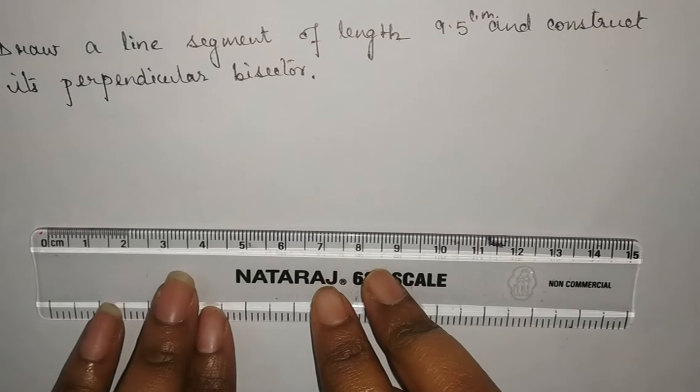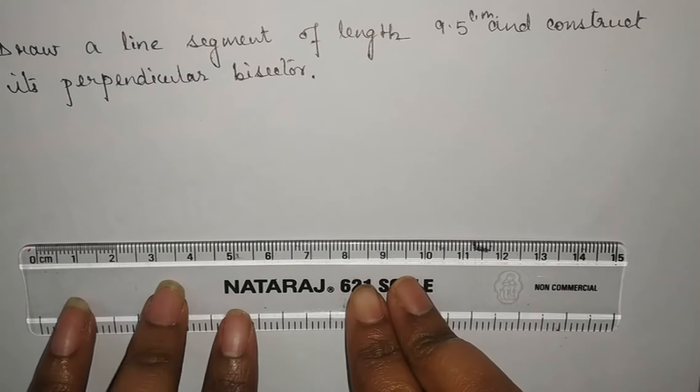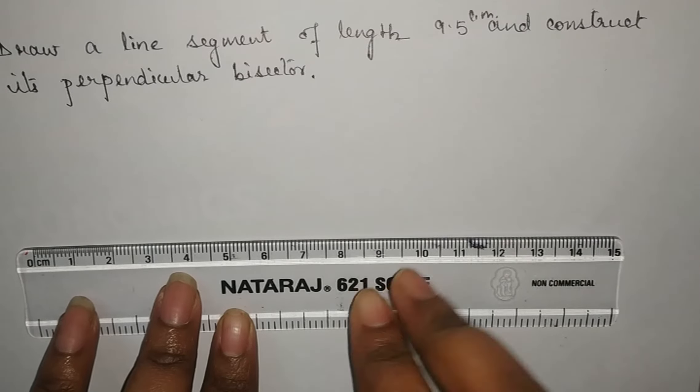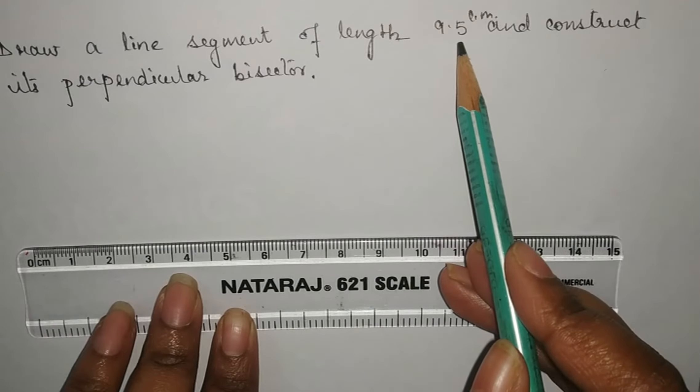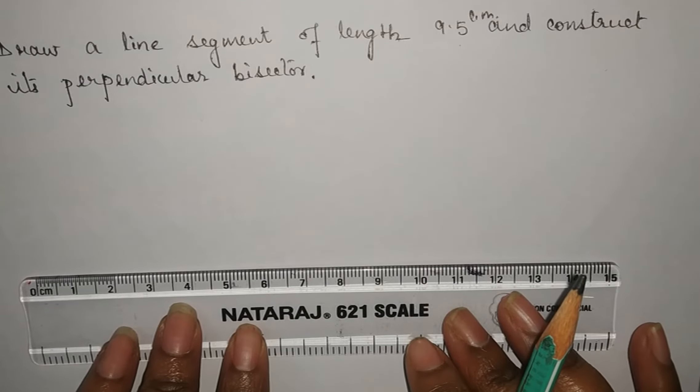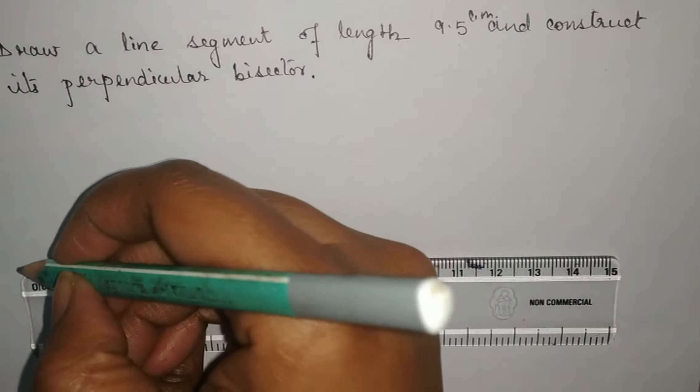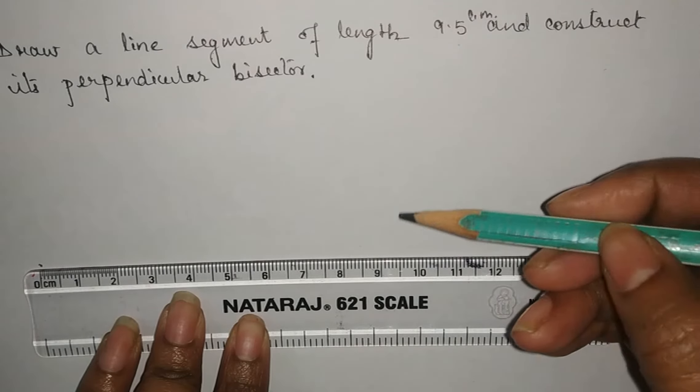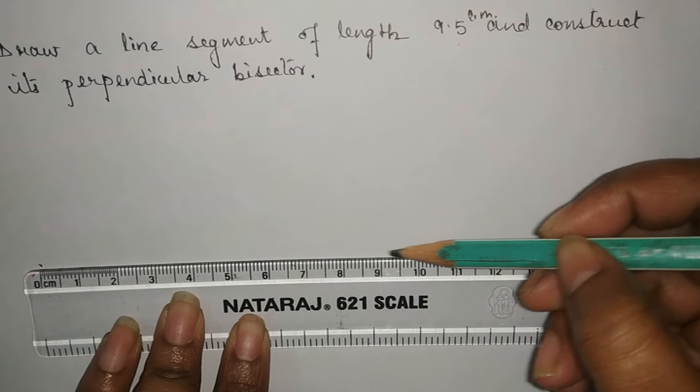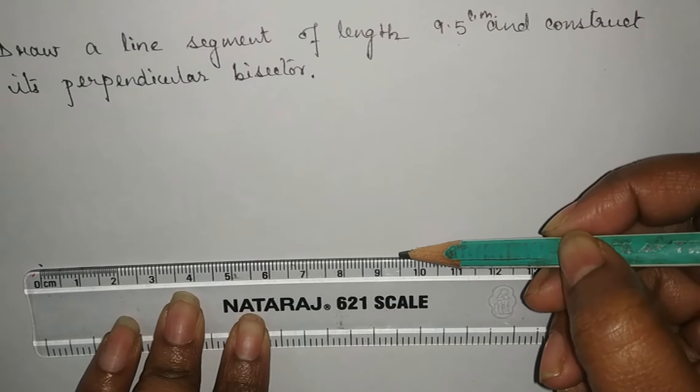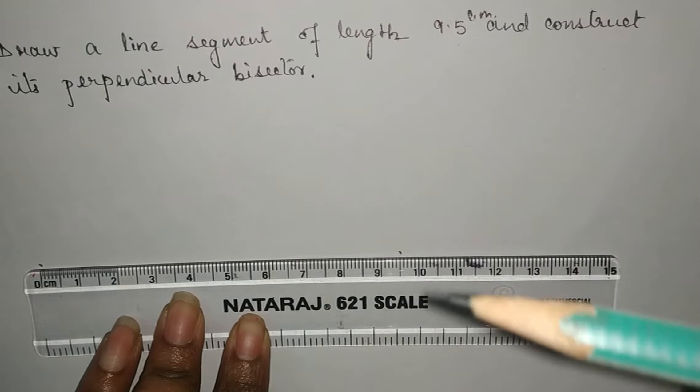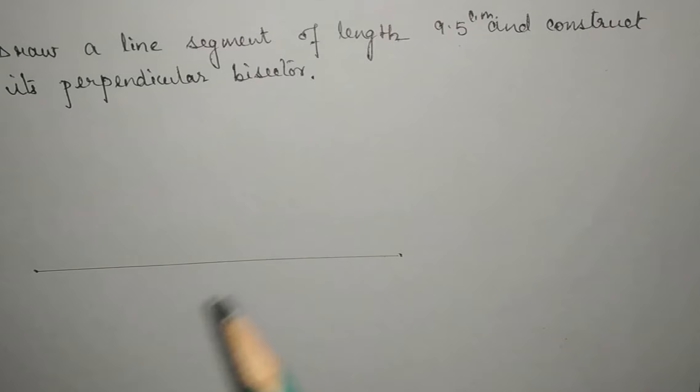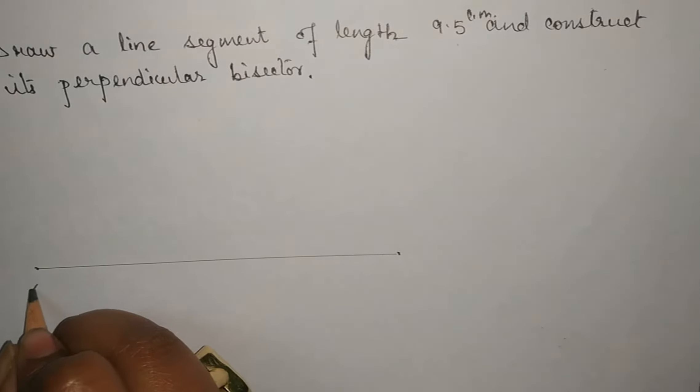We'll do similarly like the previous one. First, we will draw the line segment of length 9.5 centimeter. We'll take a point here, start from 0, and 9.5 is exactly in between 9 and 10. Now join these two points and name them A and B.